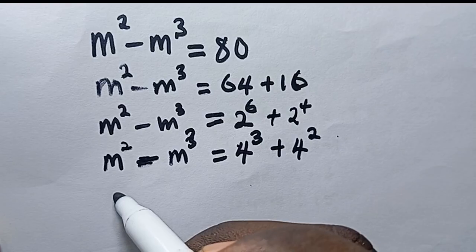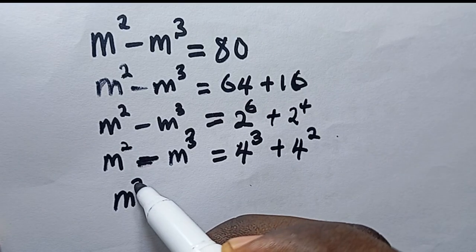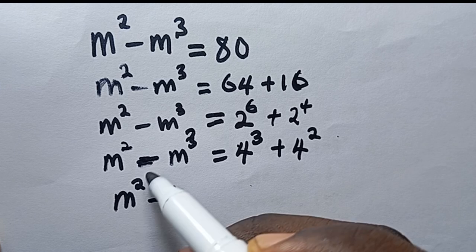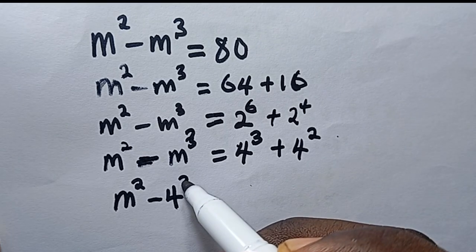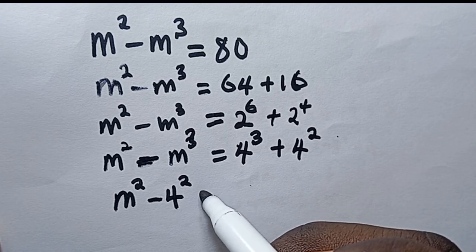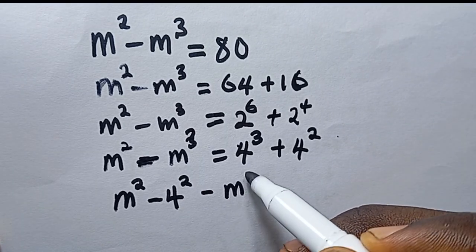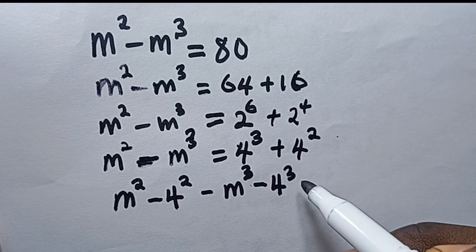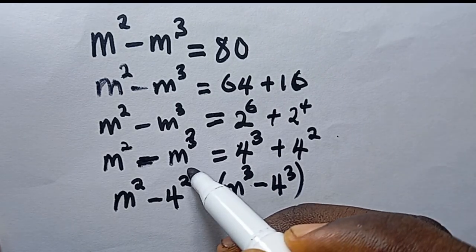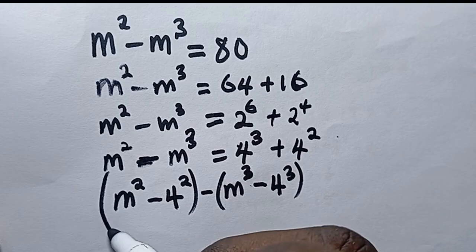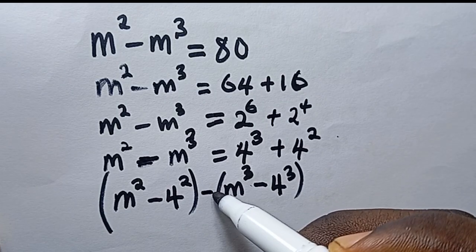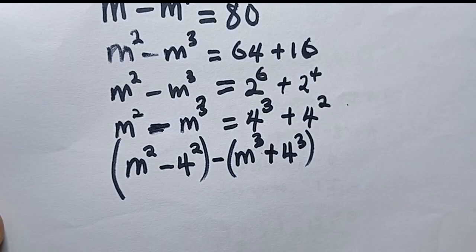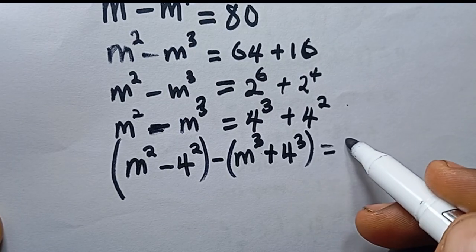Next I'll group the terms. The ones with power 2 go on one side, so I have m² minus 4², and the ones with power 3 give minus m³ minus 4³. Since I've put these in parentheses, I'll change the sign to plus, so that when I open the bracket I get a minus.